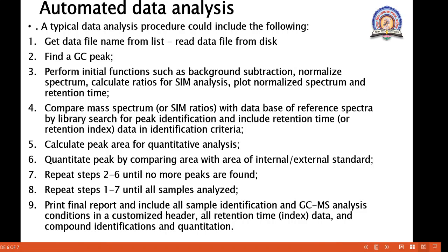Automated data analysis — the last point from this chapter. A typical data analysis procedure could include the following steps: get the data file name from the list, read the data file from disk, find the GC peak, then perform initial functions such as background subtraction, normalization, spectrum calculation, calculate the ratio for selected ion monitoring analysis, and plot the normalized spectrum and retention time.